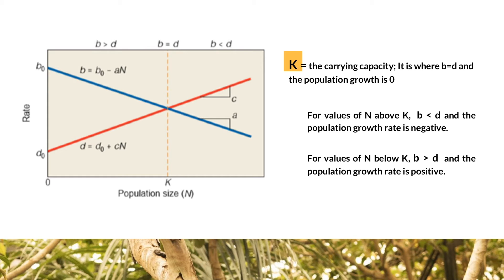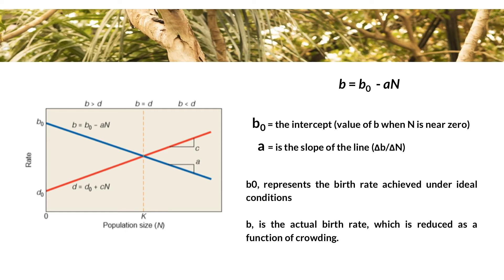For values of N above K, the birth rate is less than the death rate and the population growth rate is negative. For values of N below K, B is greater than D, and the population growth rate is positive. We can describe the line representing the change in birth rate as a function of population size, which is B equals the ideal birth rate minus the slope of birth rates A multiplied by the population density, or N. In this equation, B sub-0 is the intercept, or the value of B when N is near zero, and A is the slope of the line.